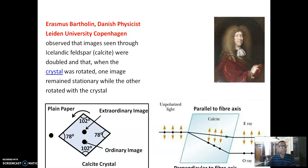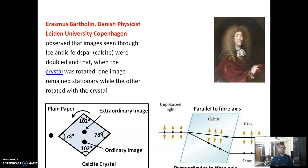There was another scientist named Erasmus Bartholin, a Danish physicist associated with the Latin University of Copenhagen. He observed that images seen through Icelandic feldspar — basically calcite — were doubled, and that when the crystal was rotated, one image remained stationary while the other rotated with the crystal. That was a great discovery of that time.